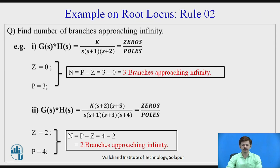For example, consider the open loop transfer function K divided by s(s+1)(s+2). In this case the number of zeros is zero and the number of poles is three. So the number of branches approaching infinity is 3 minus 0, which implies three branches are going to approach infinity.